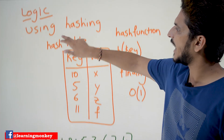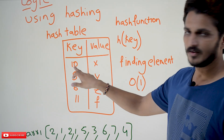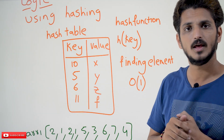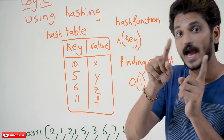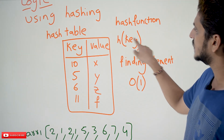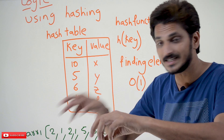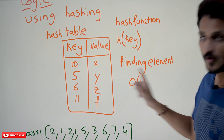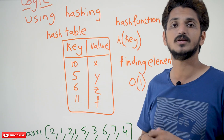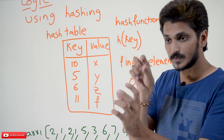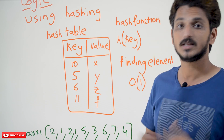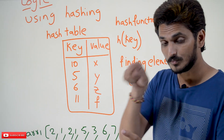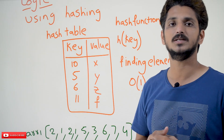Let's refresh the concept of hashing. Using hashing, a hash table contains key-value pairs. For example, key 10 maps to value X, key 5 maps to Y, key 6 maps to Z, key 11 maps to F. If you want to identify the element 6 from the hash table, we can do that efficiently using the hash function. The hash function provides you the location of 6 directly. Finding an element in hashing is done in O(1) time — this point is very important. We can identify elements present in a hash table in O(1) time, without searching one by one. Directly we can jump to the position based on the hash key.